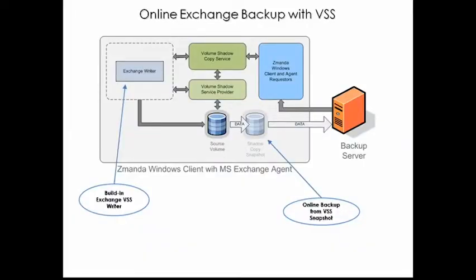Amanda Enterprise utilizes the Volume Shadow Services, or VSS, technology built into Microsoft Windows Server in order to perform online backups of Microsoft Exchange Server. When you install the Exchange Server software, a VSS writer is automatically included that provides integration between the Exchange database store and the VSS technology. When the Zamanda Client for Windows performs a backup, the Zamanda MS Exchange agent informs VSS that a snapshot is needed. VSS works with the Exchange Server to create the snapshot. The backup is performed from the snapshot, and then the snapshot is discarded, all while allowing the Exchange Server to run and service requests at the same time.